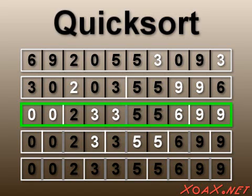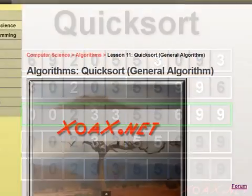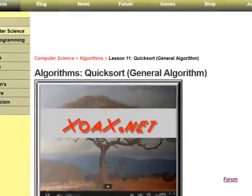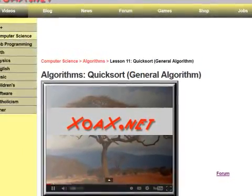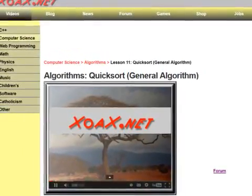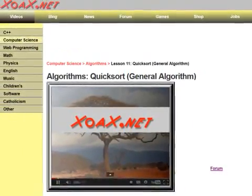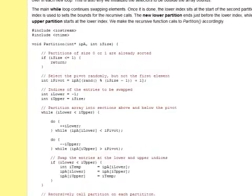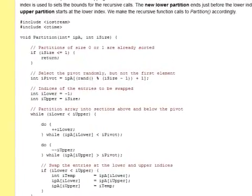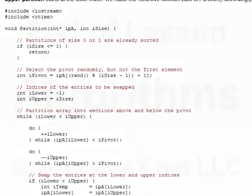Notice that the array was sorted two stages back in this case, but that was purely coincidental. A C++ implementation of the general Quicksort is available on our lesson page at zoax.net. There you can find an explanation of the entire program as well.